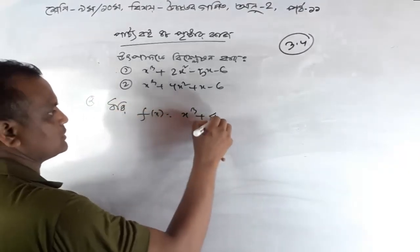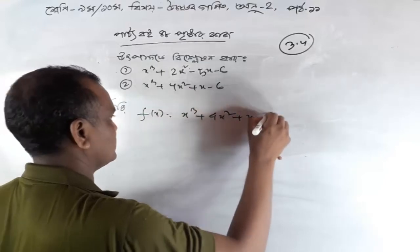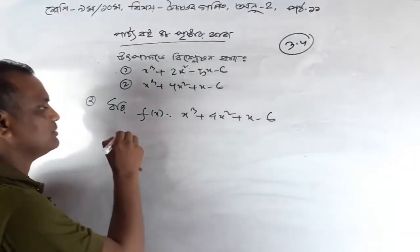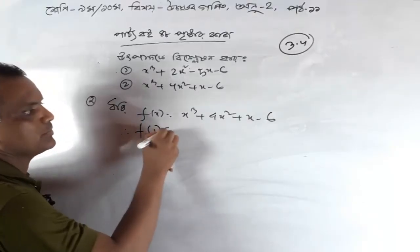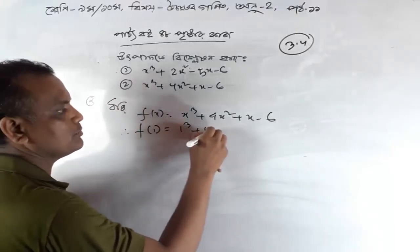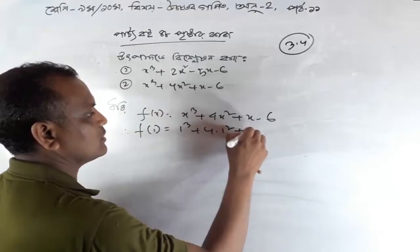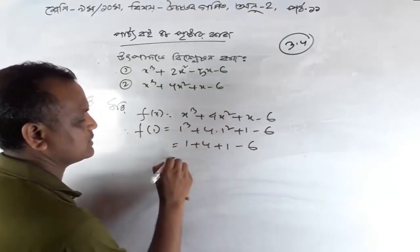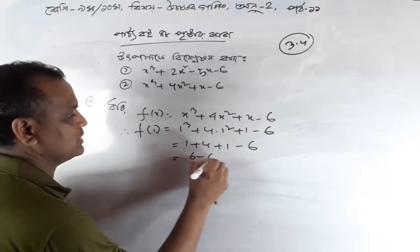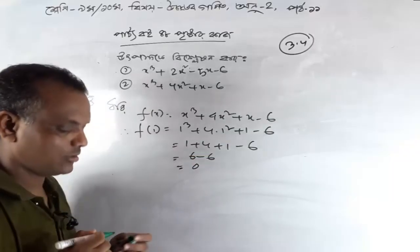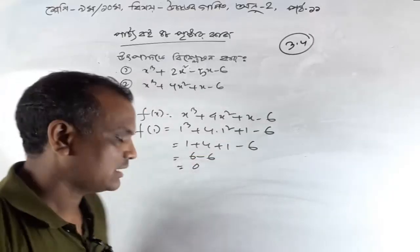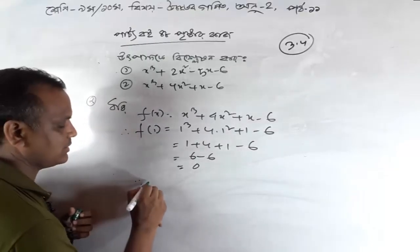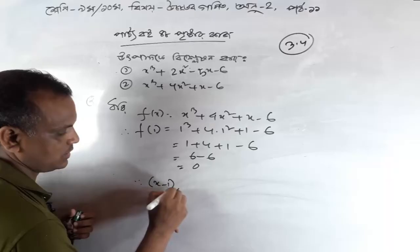x cubed plus 4x squared plus x minus 6. How much is 1 minus 6? I will see the number of 1 minus 6. 1 cube, 1 square, 1 minus 6. 1 plus 4 plus 1 minus 6. 4 plus 6 minus 6. 1 minus 1 is 0. How much is it? 5 plus 7 equals 0. That alone is x minus 1.